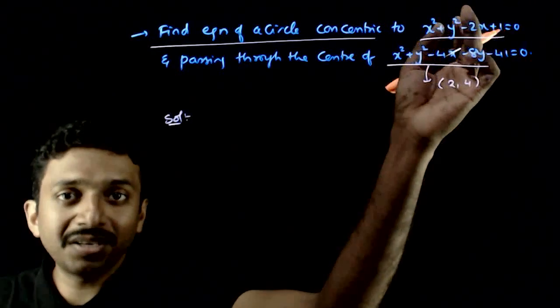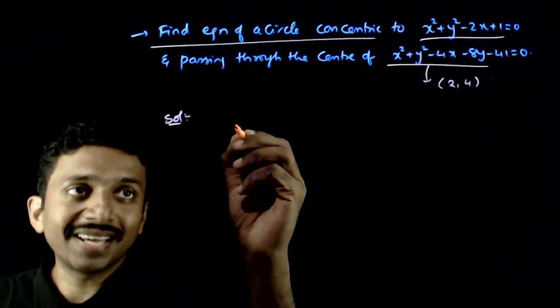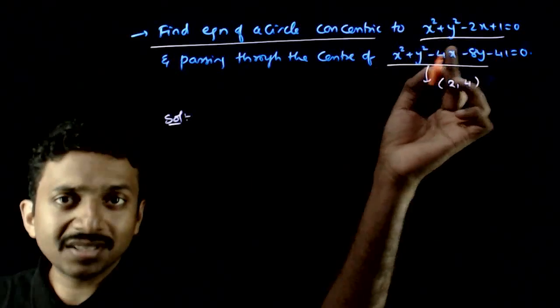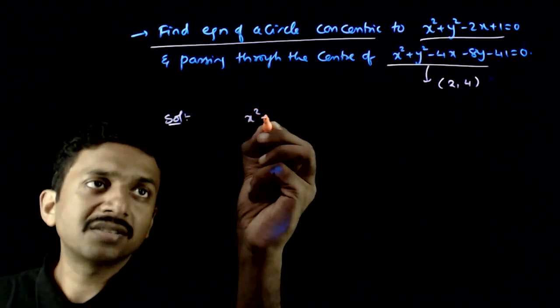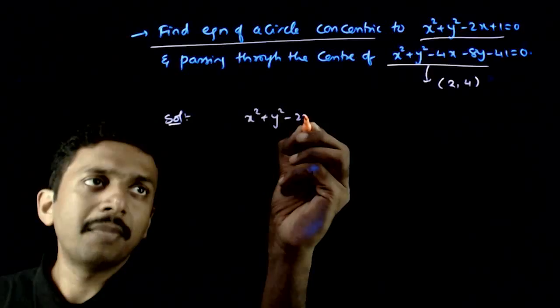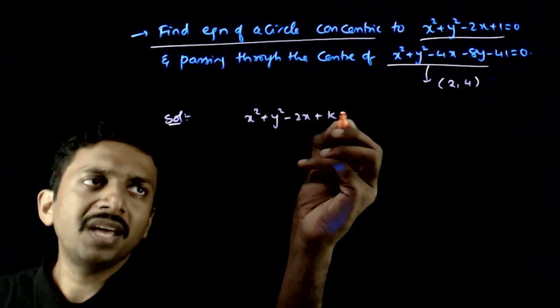So my circle has to be concentric with this. So a circle concentric to this circle will be of the form x square plus y square minus 2x plus some k is equal to 0.